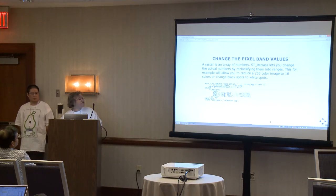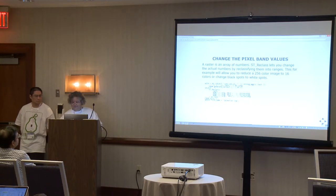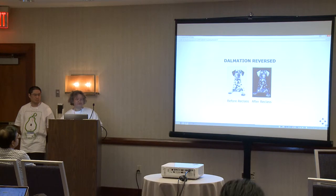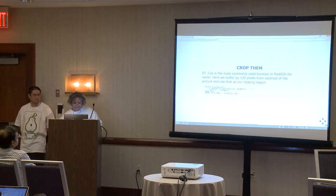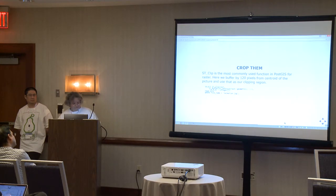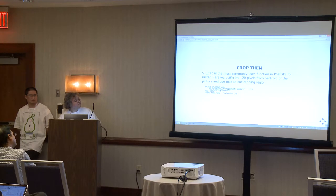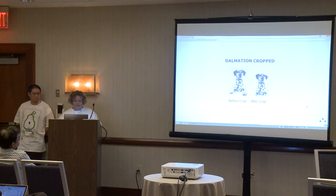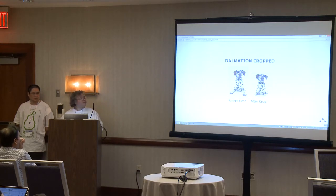You can also change the pixel values of a raster. If you want to change the coloring of a picture, you can use the reclass function — for example, changing all the blacks to whites and the whites to blacks. The most commonly used raster function is ST_Clip, which takes a portion of a raster within a geographic region. For example, you can take the centroid of the bounding box of the raster, buffer it, and end up with a cropped picture — such as cropping by the center at 120 pixels.